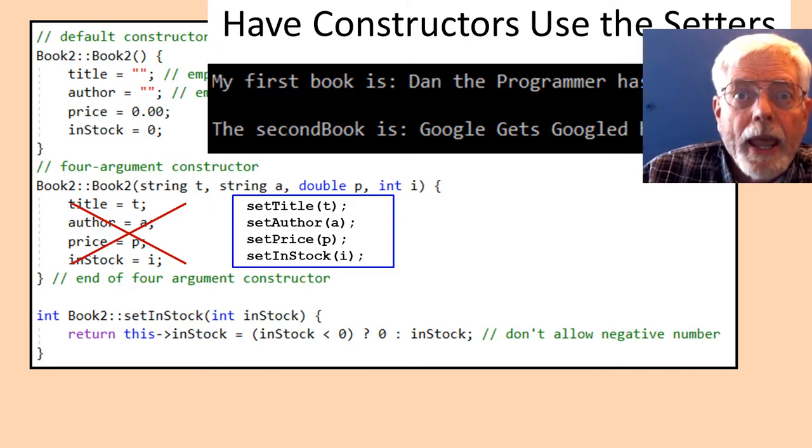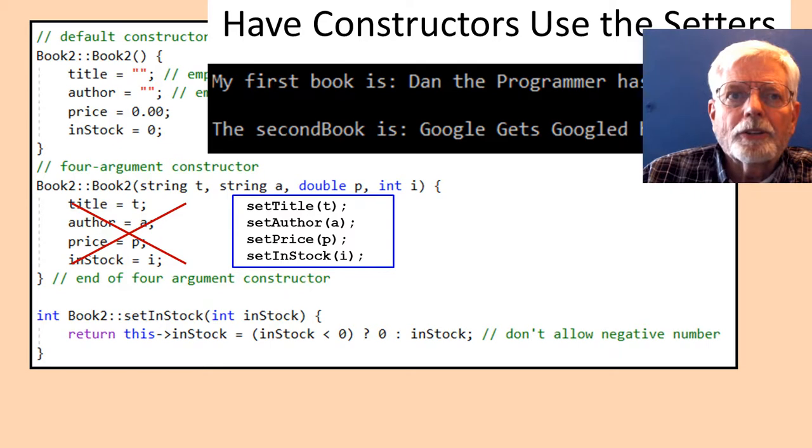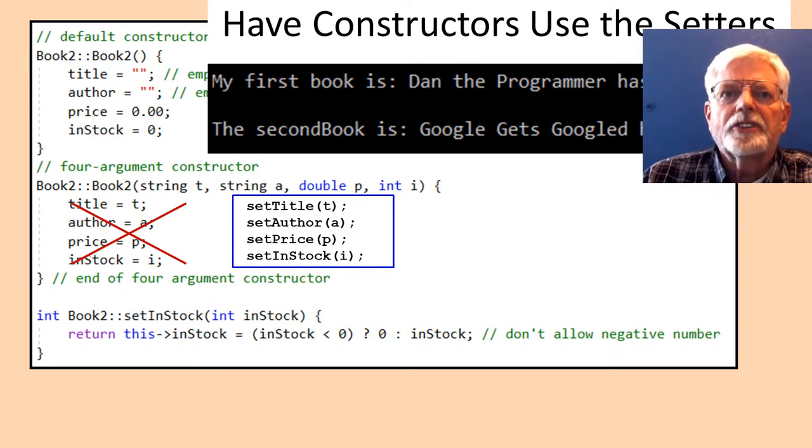Have the four argument constructor call the setters instead of blindly copying data from the argument list into the member variables. Now, it doesn't matter whether the four argument constructor is used or if the setters are used after the object is instantiated.